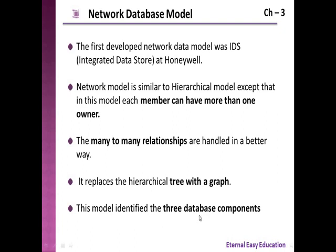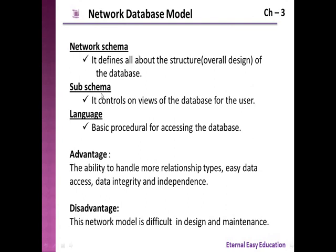The network database model identifies three database components: network schema, sub-schema, and language. The network schema defines the overall structure of the database — how the database is interlinked and what tables are present. The sub-schema controls the view of the database for a user. When a table is interlinked with many tables, there must be a view for a particular table — simply a restriction or derived data only.